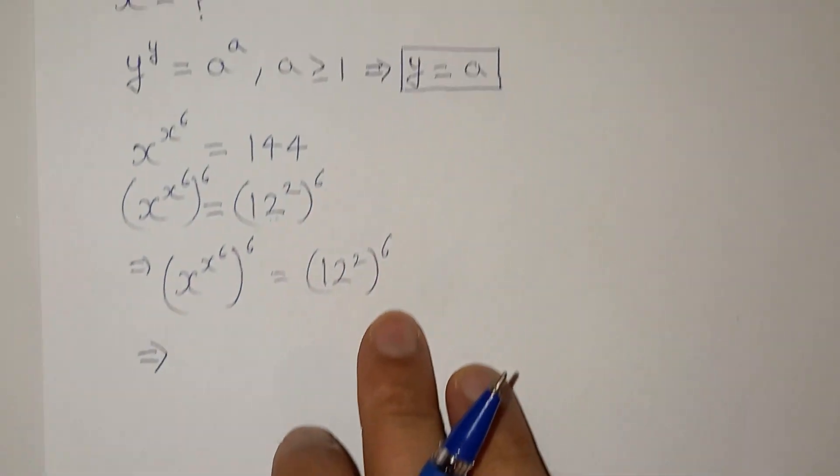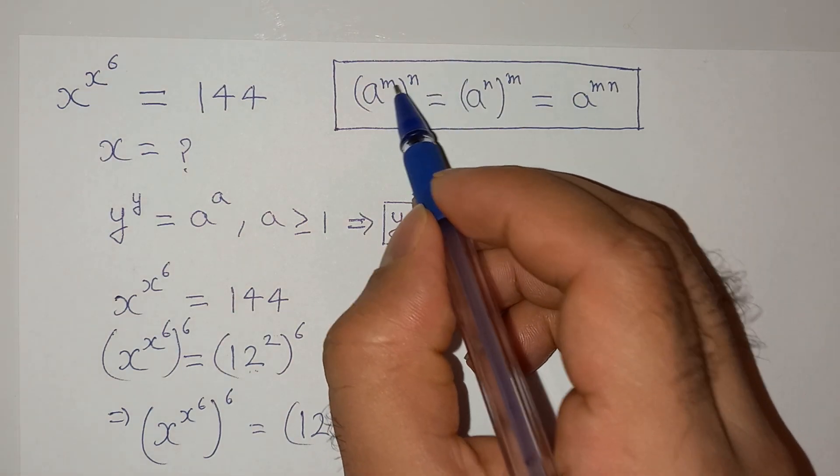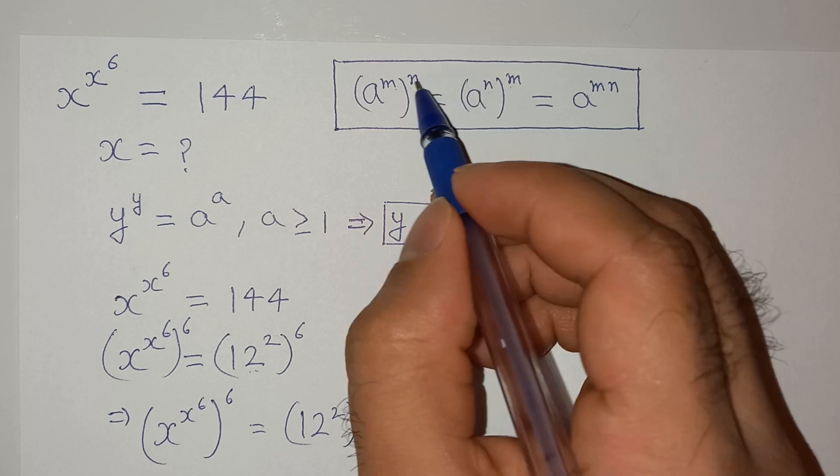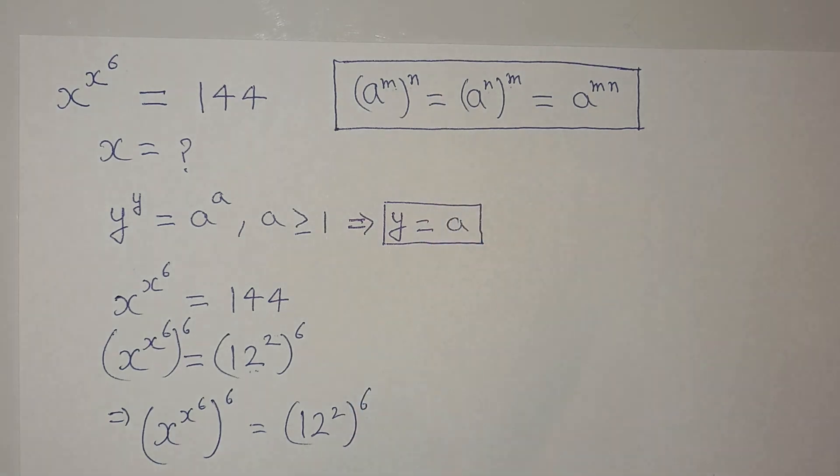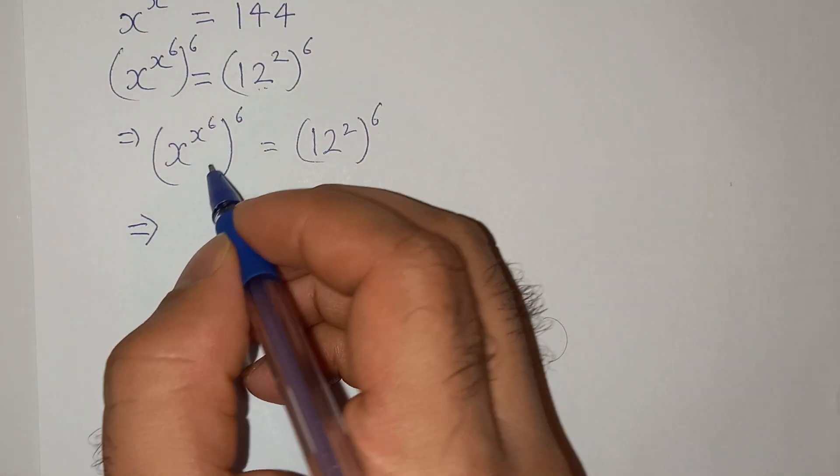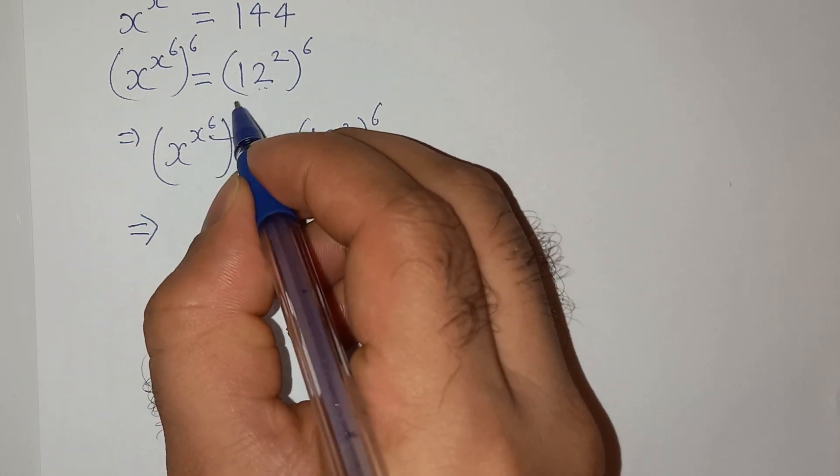Now you know this very famous exponential rule which is (a^m)^n can be written as (a^n)^m. So basically this n goes inside the bracket and this m goes outside the bracket. So we are going to apply the same rule here. This 6 will go inside and this x^6 will go outside.